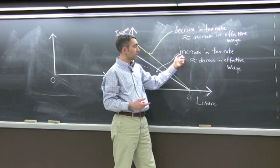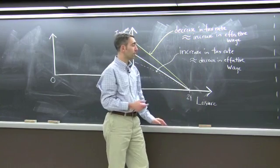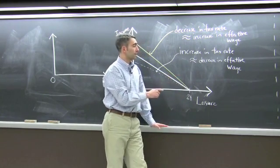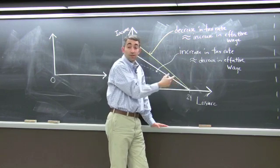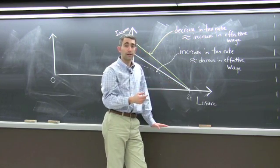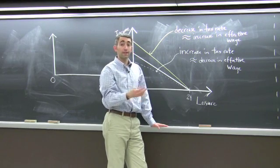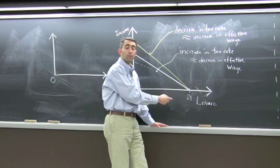Let's look at an increase in the tax rate. An increase in the tax rate effectively decreases my take-home wage. So what does the substitution effect say? Well, if my wage rate has gone down effectively, then the opportunity cost of leisure has gone down. So the substitution effect says I'd consume more leisure. If I'm consuming more leisure, that means I'm working less.